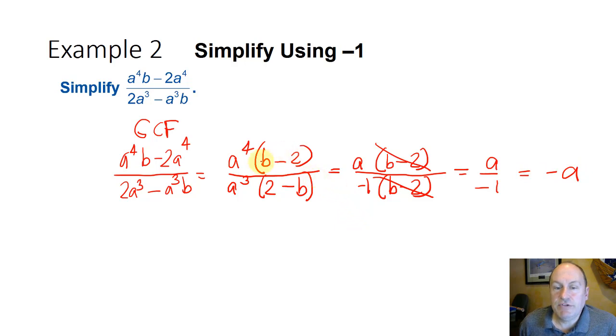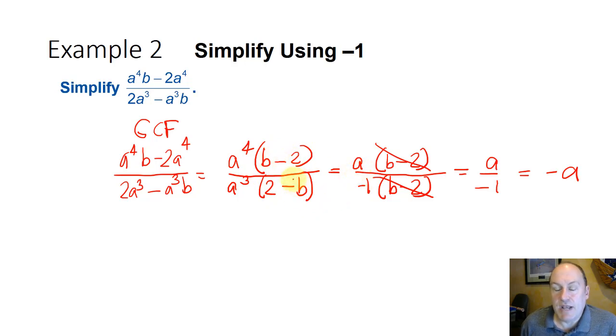So if you have two terms like (b minus 2) and (2 minus b) that are reversed, they can be simplified by factoring one of them with a negative 1.